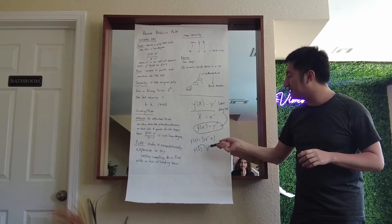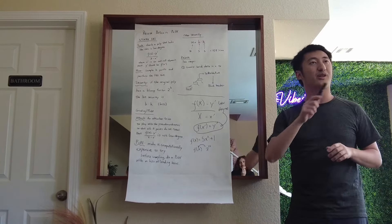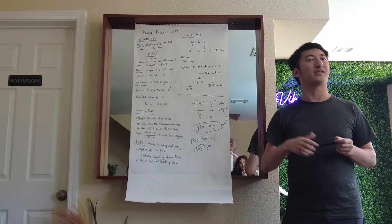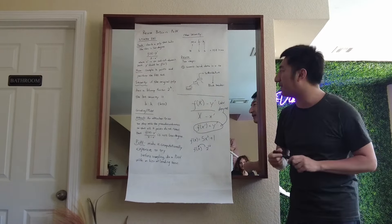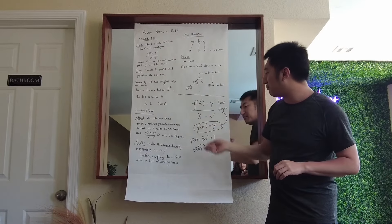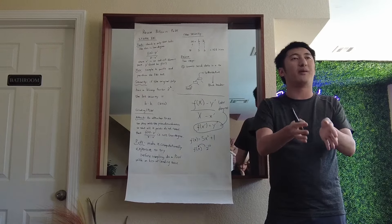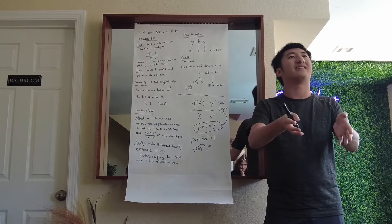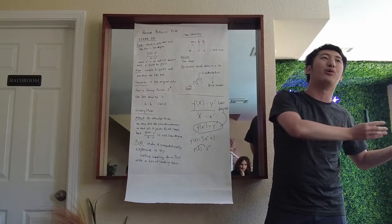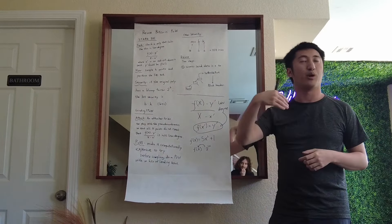Because the degree is 2 and you have 2^10 evaluations, we say the blow-up factor is 2^9, because the original degree is already 2^1. We say the blow-up factor is 2^b — here b is 9. This basically means the original polynomial is simple but you evaluate it over a bunch of points and commit all of them, providing redundancy. That's the blow-up factor.